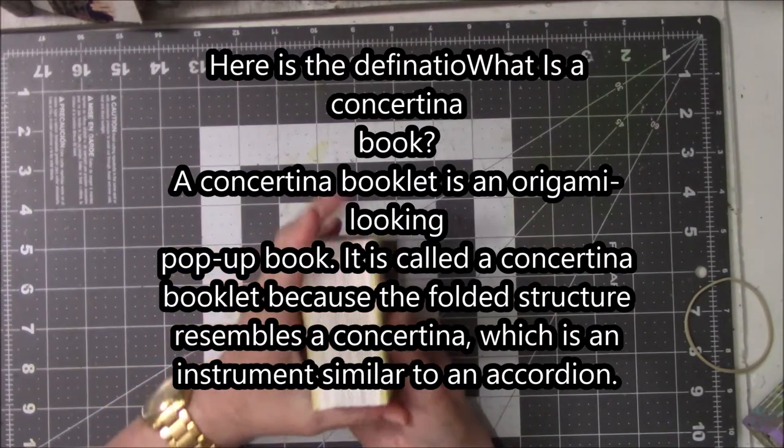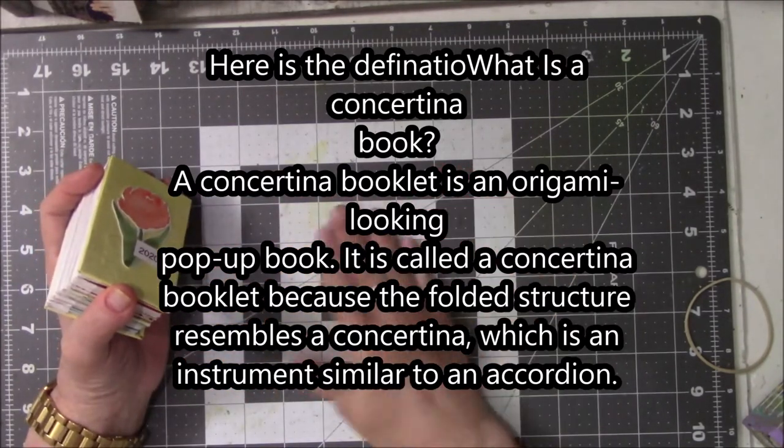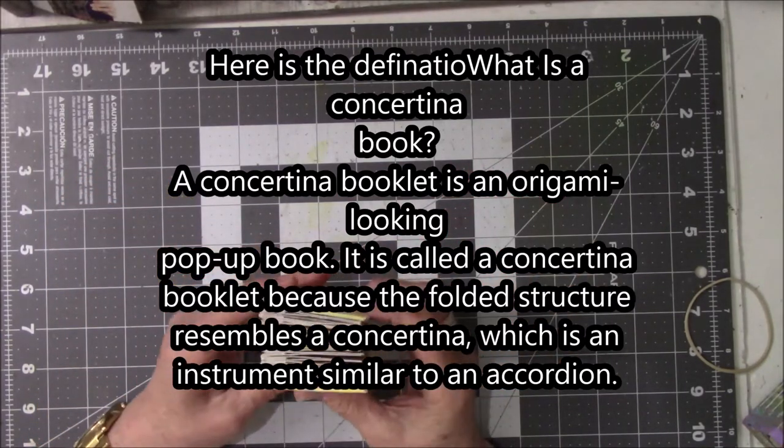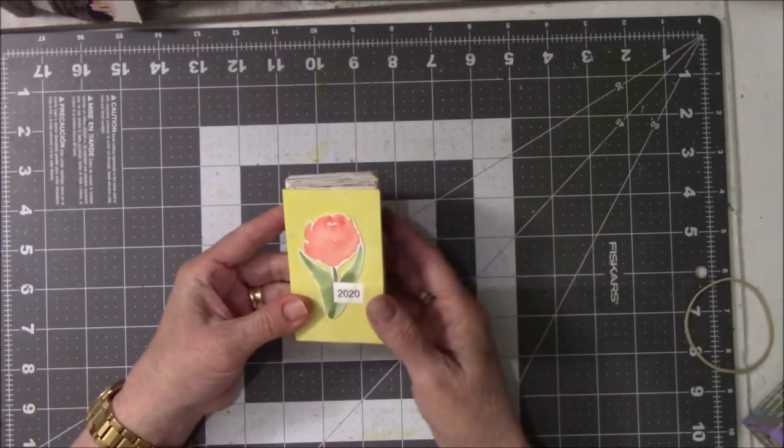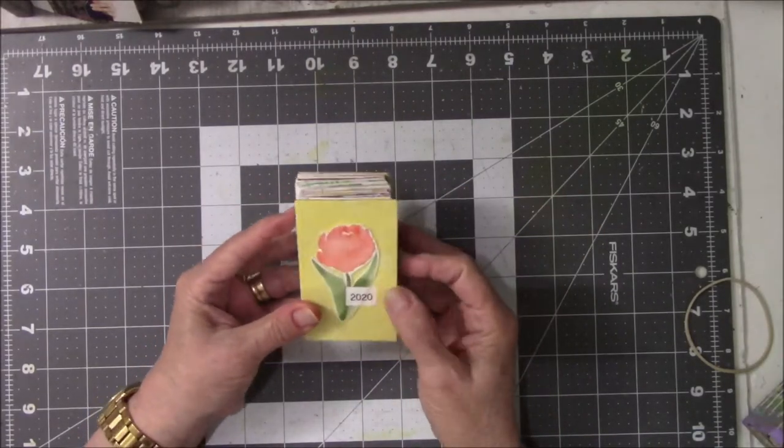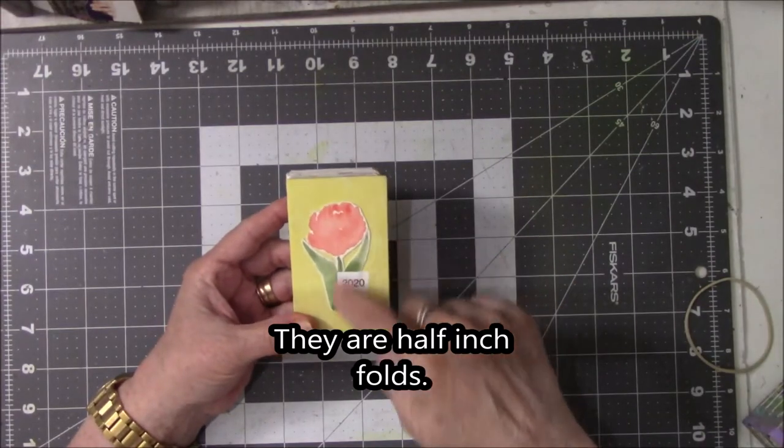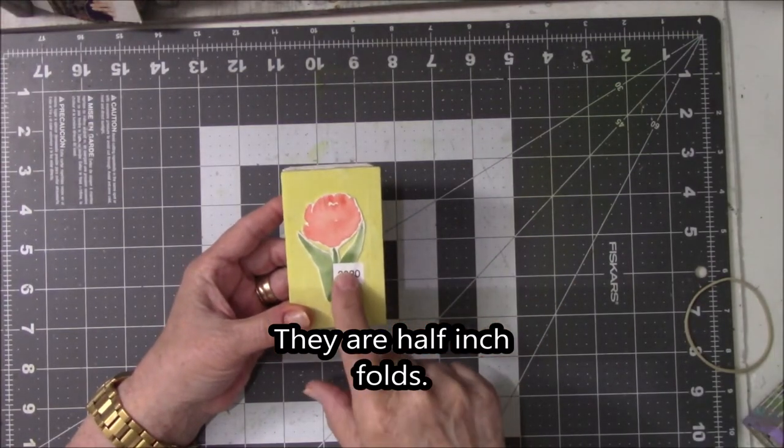So the spine is open. It's just paper that's folded back and forth. I think these are half inch folds. Either half inch or quarter inch, I can't remember. I made this a year ago. It's been finished for a year, except for today I added the flower and the year 2020 on it so I could remember what year it was.